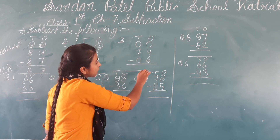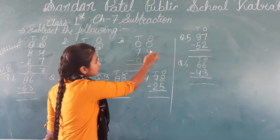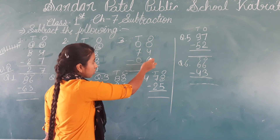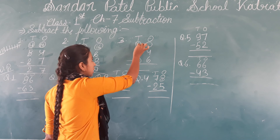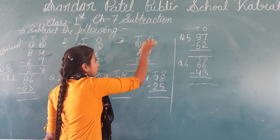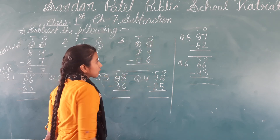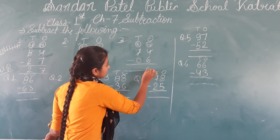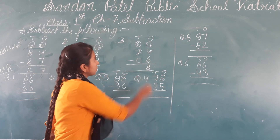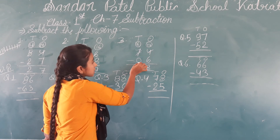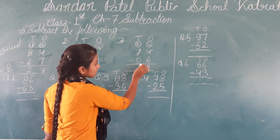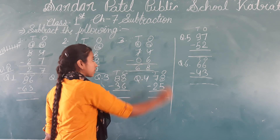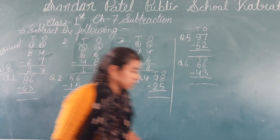Now we will take 74 minus 64. Looking at the ones place: 4 minus 4 — but we check if borrowing is needed. Taking the tens place, we get 14. Now 14 minus 6 — because 14 is bigger, the answer is 8. For the tens place, we minus from what remains, so the tens answer is 0. The answer for this question is 8.